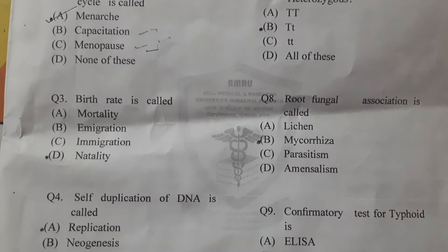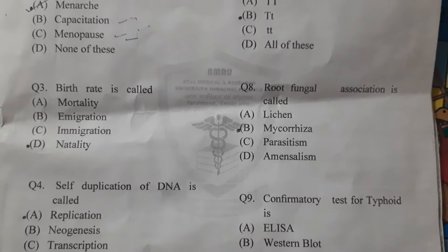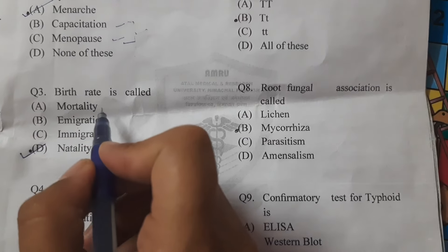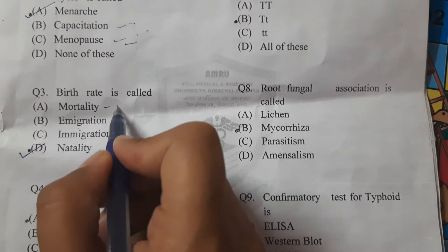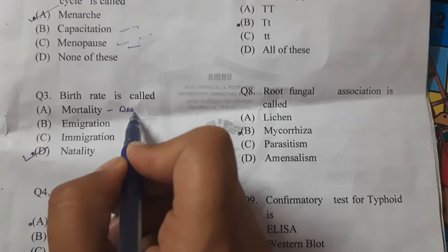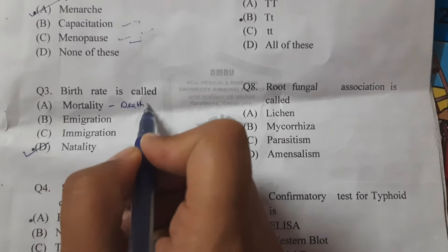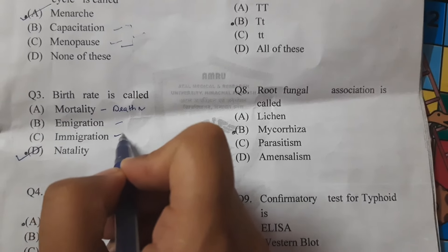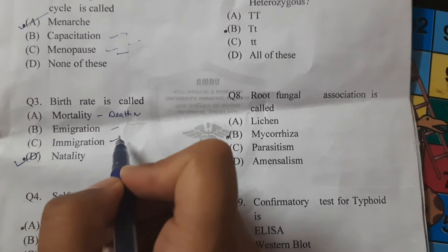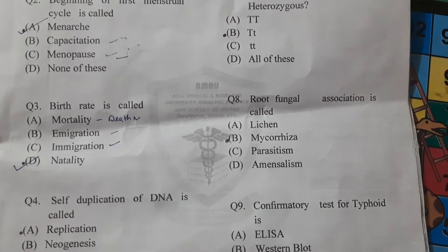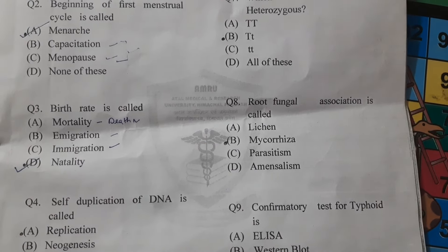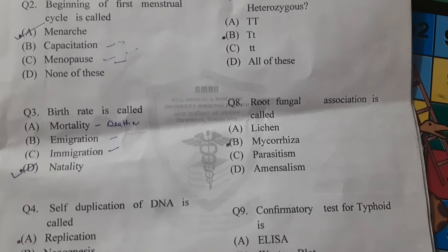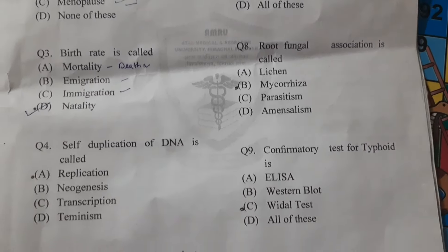Next, birth rate is called the natality rate, and death rate is called the mortality rate. Then we have immigration and emigration — these are two terms whose definitions you should check. These are basic questions from their definitions.